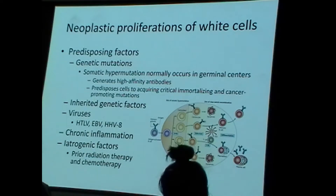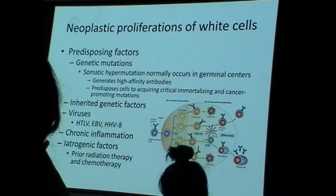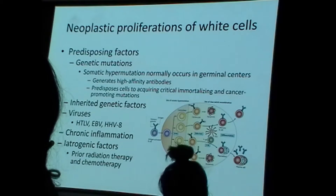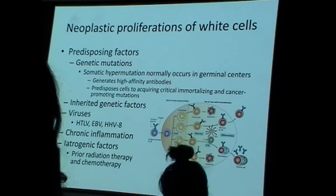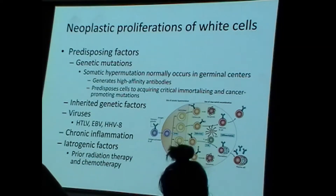There can be inherited genetic factors and also viral infections. Somatic hypermutation — the process of responding to an antigen — occurs more frequently in the context of an infection. You can therefore understand how a viral infection results in an increased risk of white blood cell cancers.